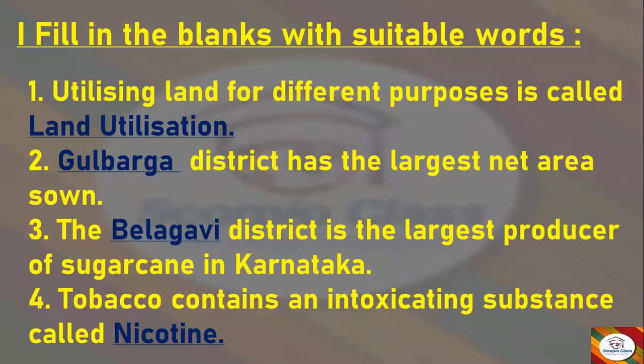First: Utilizing land for different purposes is called — answer: land utilization. Next: The blank district has the largest net area sown — answer: Gulbarga. Next: The blank district is the largest producer of sugarcane in Karnataka — answer: Belagavi. Next: Tobacco contains an intoxicating substance called — answer: nicotine.